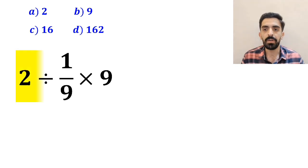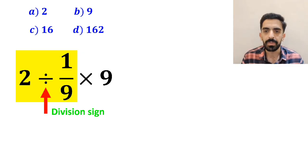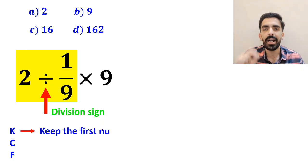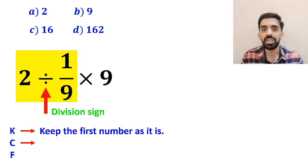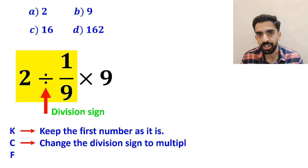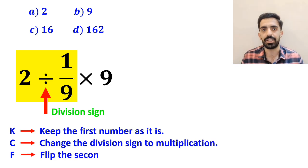First we perform the division between 2 and 1 over 9. Whenever we see a division sign between two terms, it's best to use the KCF rule. In this rule, K means keep the first number as it is, C means change the division sign to multiplication, and F means flip the second fraction.